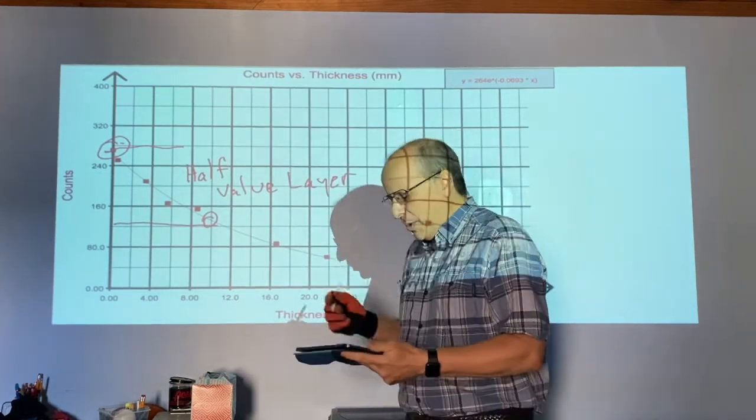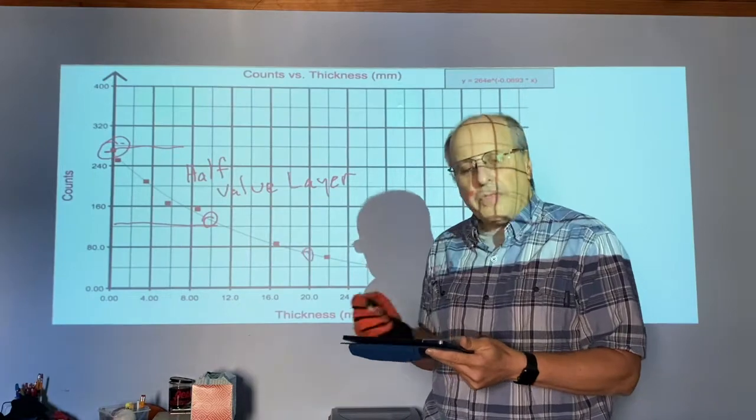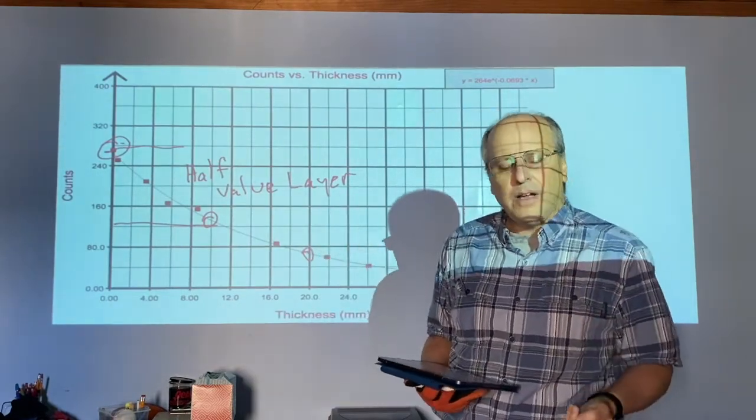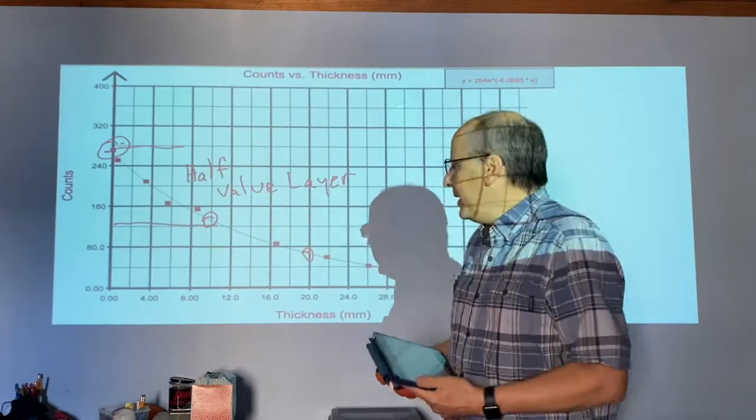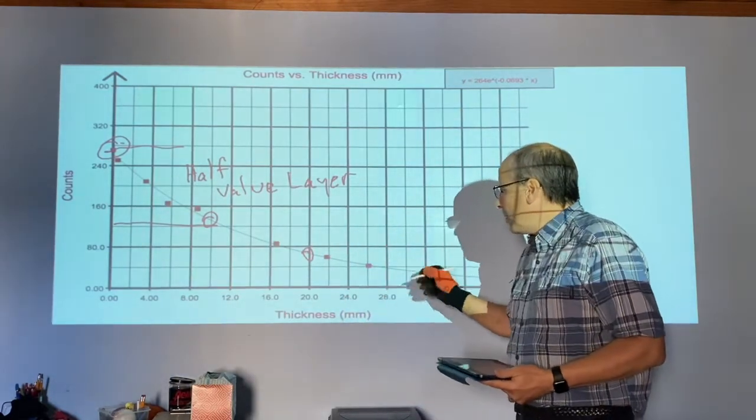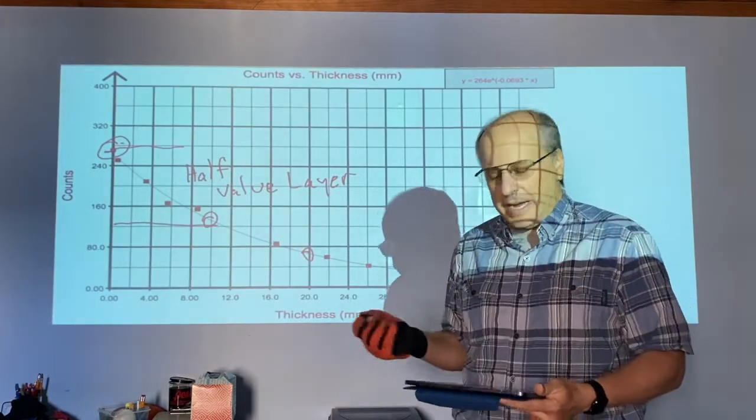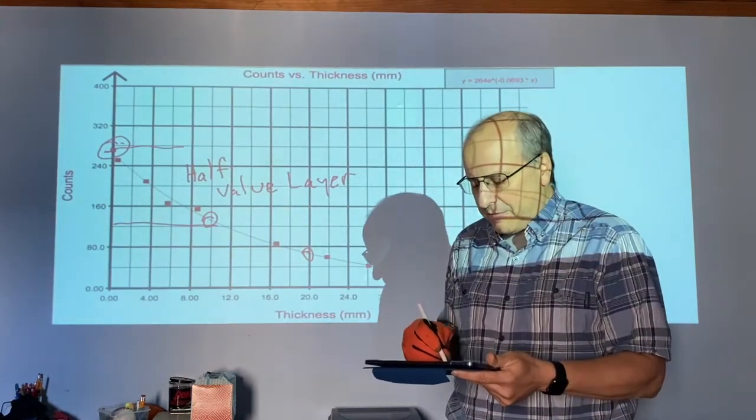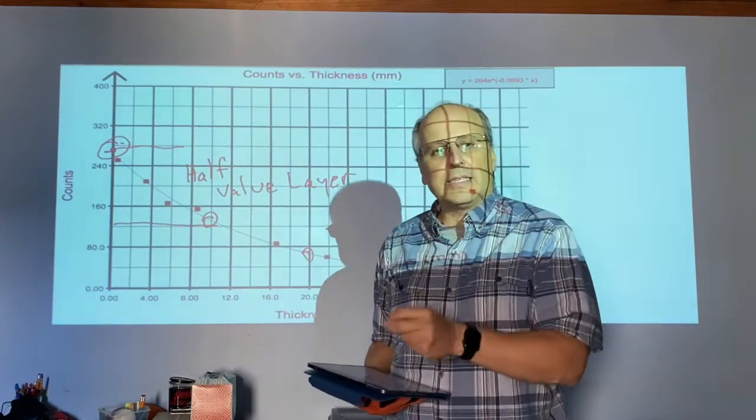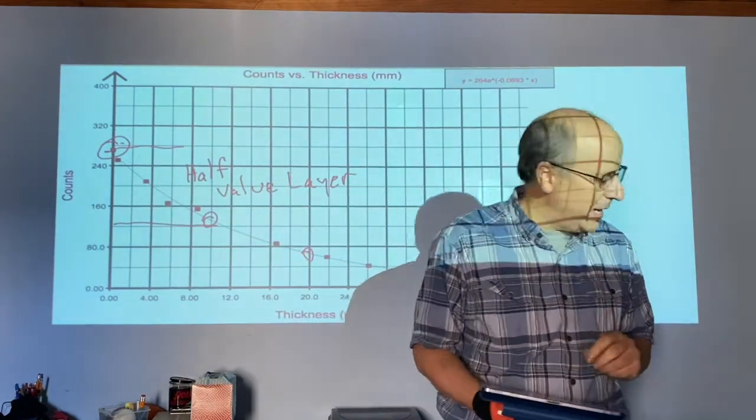Notice when you go to 20 millimeters, you don't knock out the other half. You only knock out half of what was left. So each time you add another 10 centimeters, you knock off another half of the radiation. You'll never get it down to zero. You just make it less and less likely that the particles will make it through.